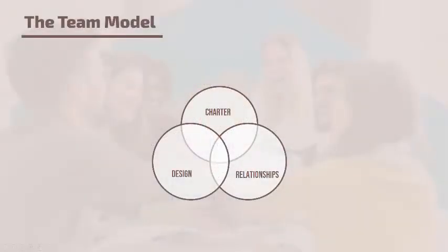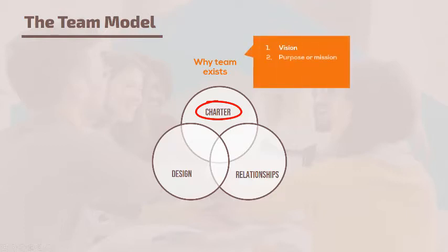Here's a diagram that illustrates the most important elements of the team or work group. Notice the three parts. It begins with charter, which describes why the team exists, and it includes such elements as your vision, your purpose or mission statement, your values, and your goals.